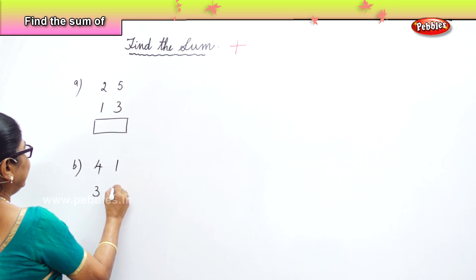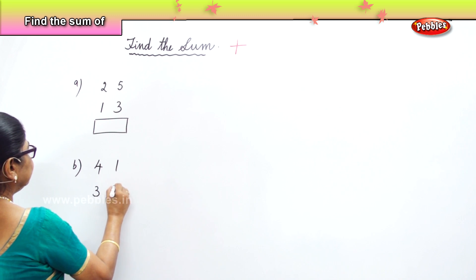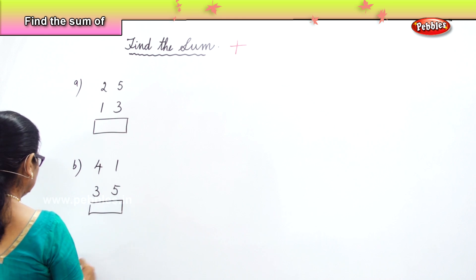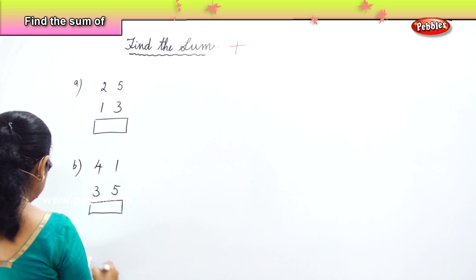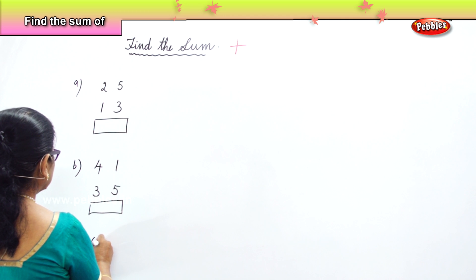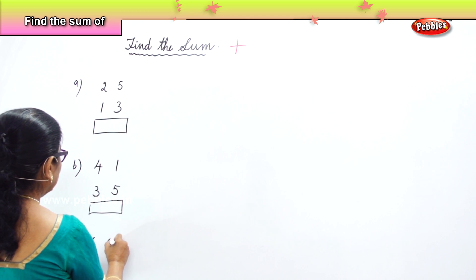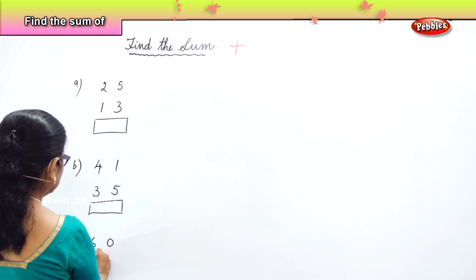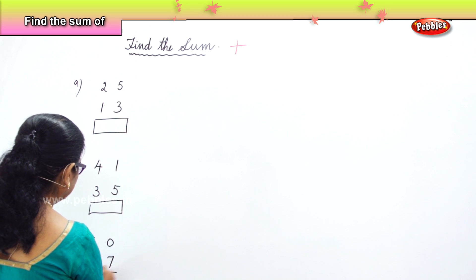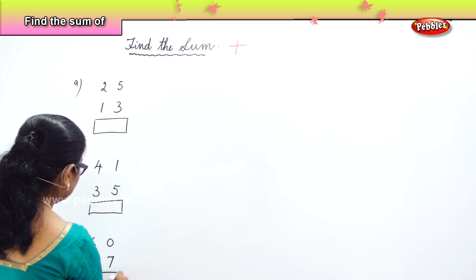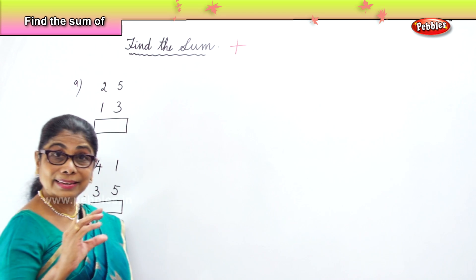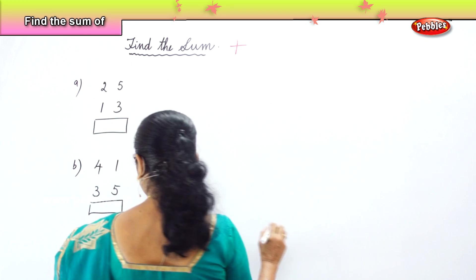Alright? Thirty-five. Sixty plus seventeen. You are going to find the sum of the numbers I've given.